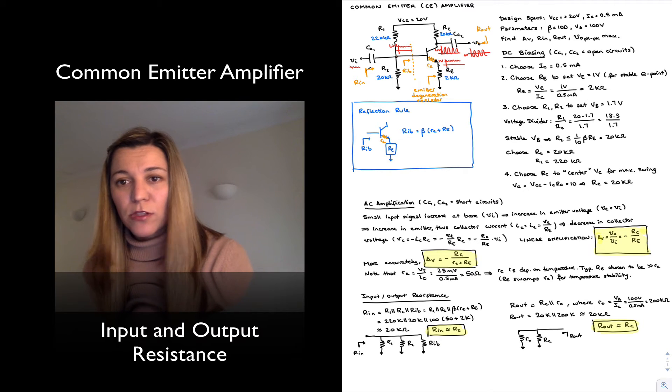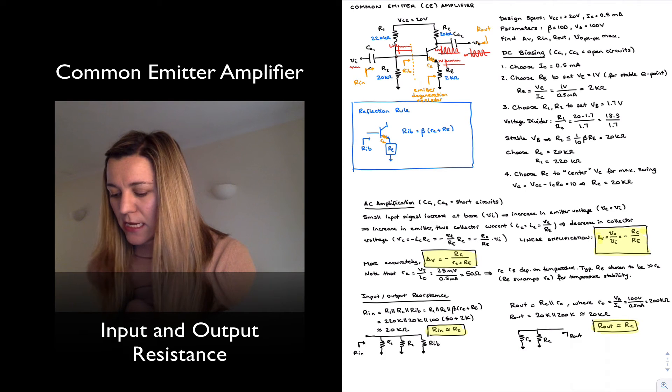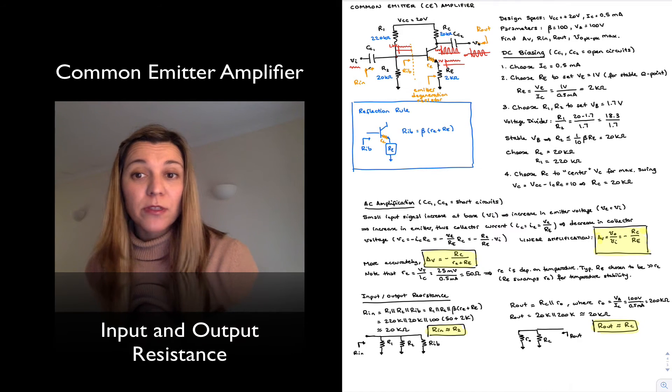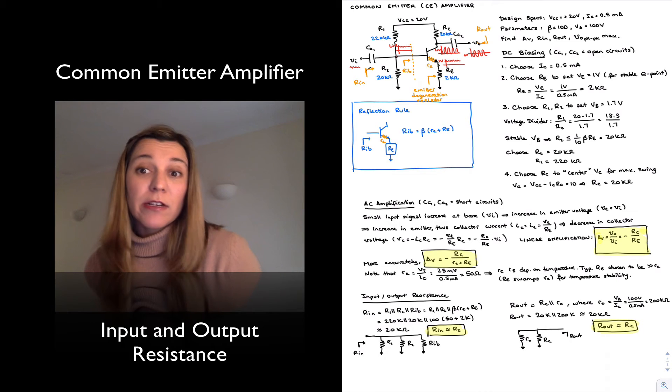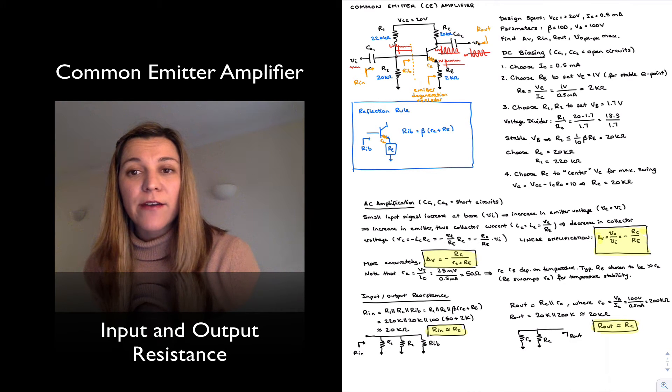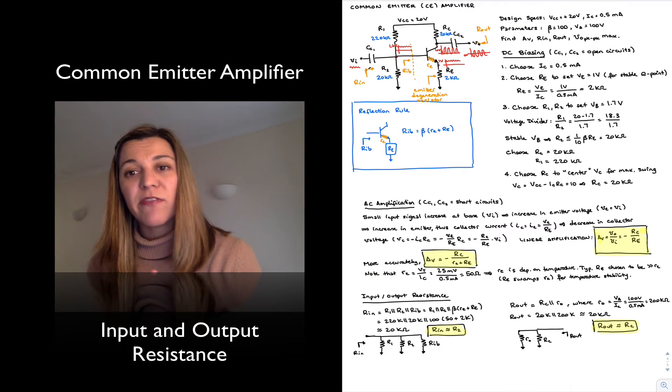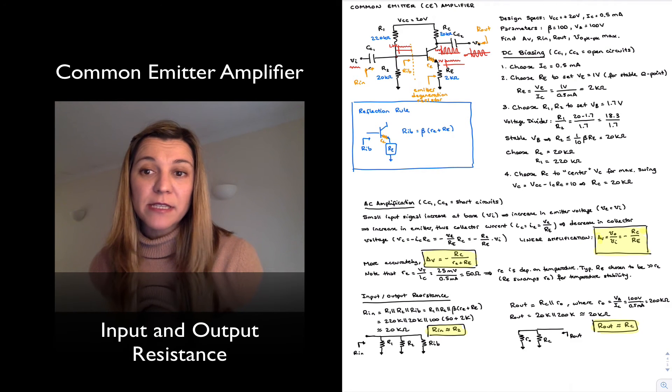The last thing I wanted to mention about this common emitter amplifier before we move on to other things is the output voltage swing. That's going to be an important parameter, an important characteristic for our amplifier, because we're trying to use it as a voltage amplifier, and the bigger or the larger the voltage swing that we have, the larger the amplification factor that we can have before the amplifier behaves non-linearly.